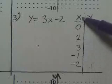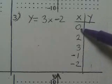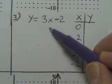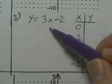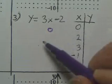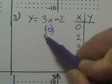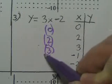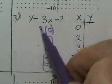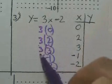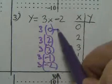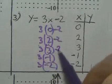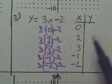So what I'm going to do is take these numbers for x. I chose these numbers for x and I'm going to put them in the equation. I'm going to put 0 in there, 2 in there, 3 in there, negative 1, and negative 2 — I'm going to put all those things in for x and see what I end up with.